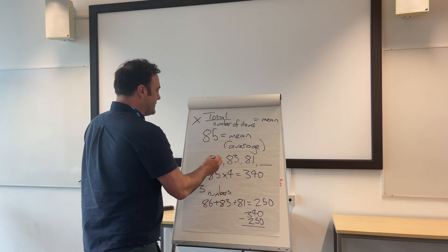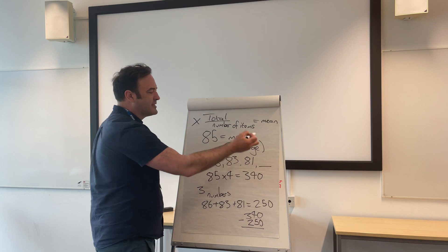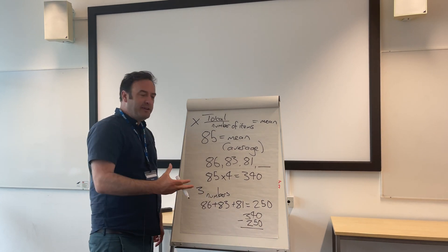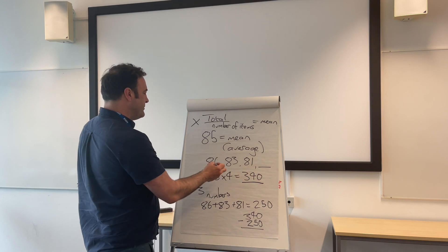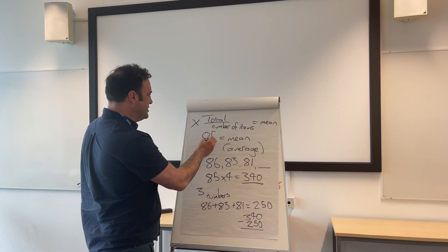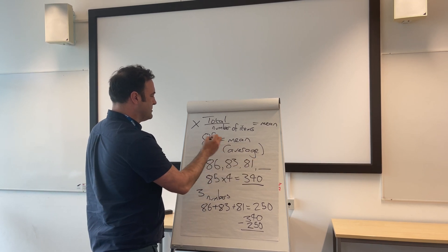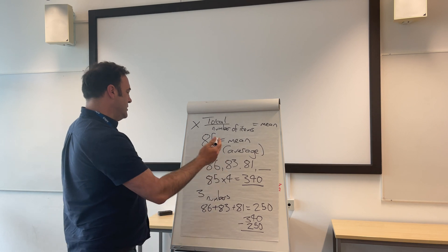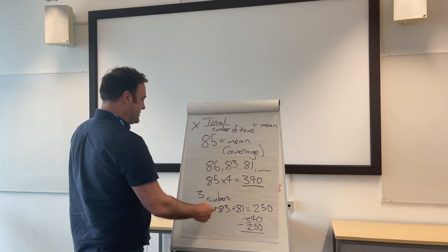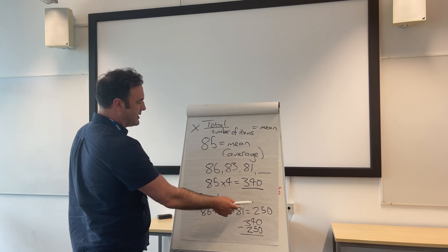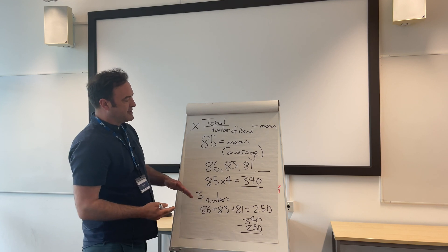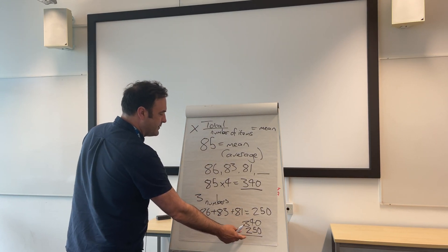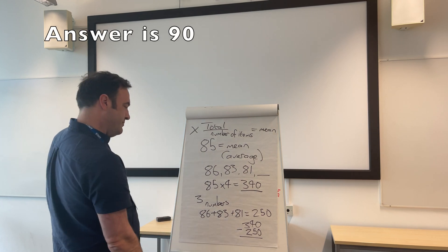So 85 is the mean for this series of numbers: 86, 83, 81, and something — the dreaded missing number average question. Start with what you've got. The average is 85 and you've got four numbers, so 4 times 85 gives us a total of 340. Then add the three known numbers together: 86, 83, and 81 — that comes to 250. Then we find the difference between 340 and 250 by subtracting, and we get the answer.